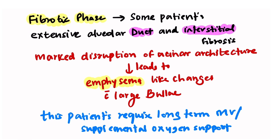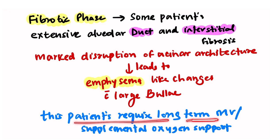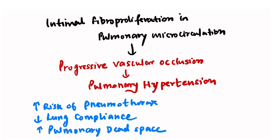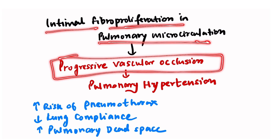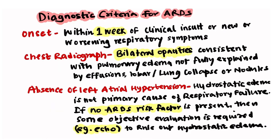The fibrotic phase occurs after day 21. It is characterized by extensive alveolar duct and interstitial fibrosis, marked disruption of acinar architecture, and emphysema-like changes with large bullae. Patients in this phase may require long-term mechanical ventilatory support and supplemental oxygen. Intimal fibroproliferation in the pulmonary microcirculation leads to progressive vascular occlusion and pulmonary hypertension. The fibrotic phase is associated with increased risk of pneumothorax, decreased lung compliance, and increased pulmonary dead space.